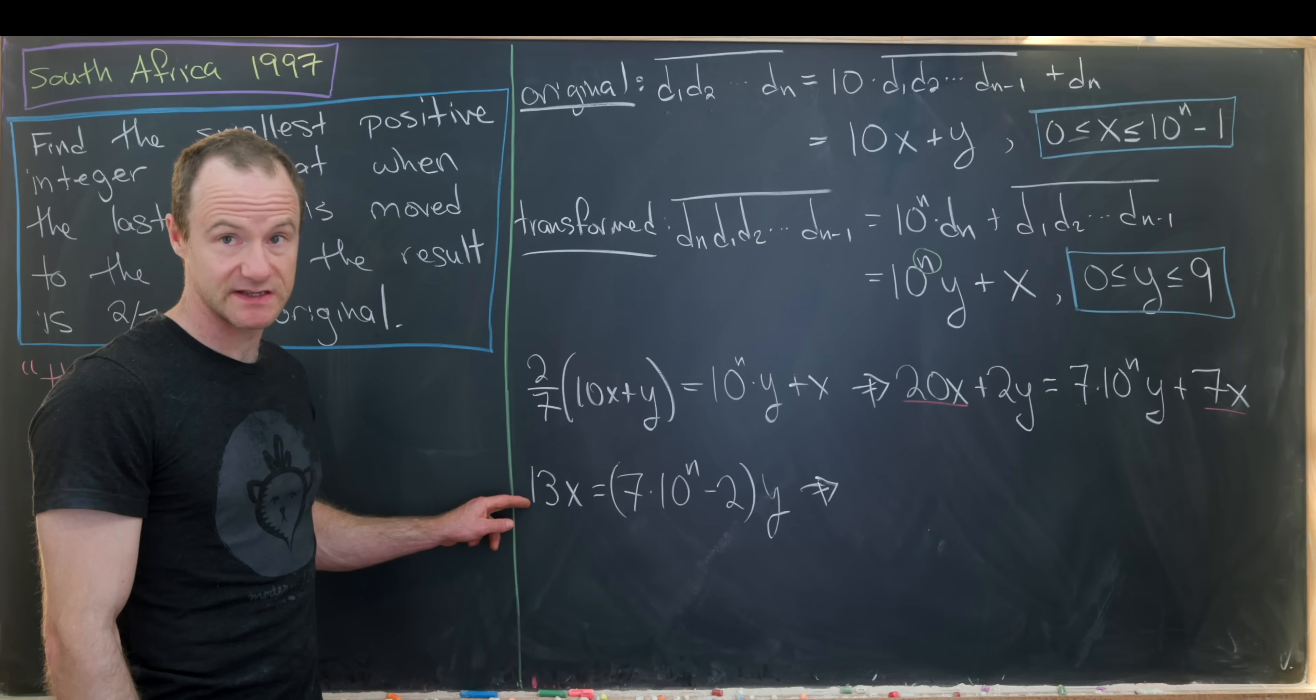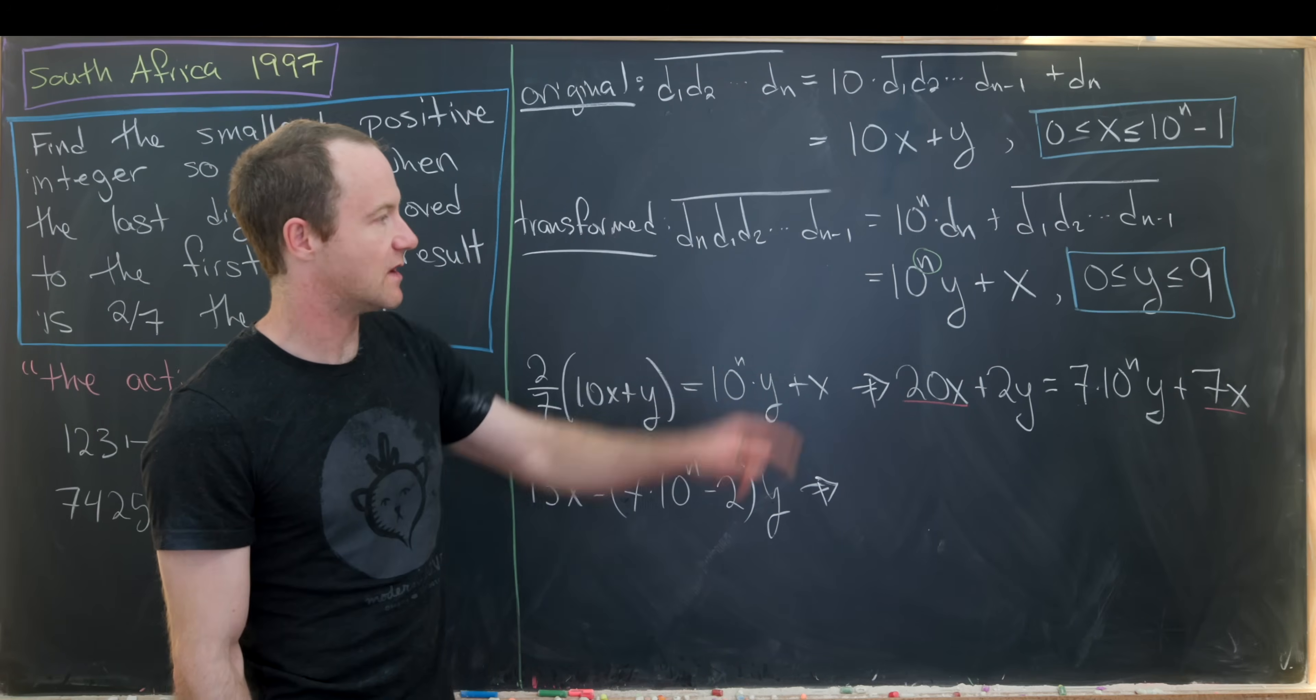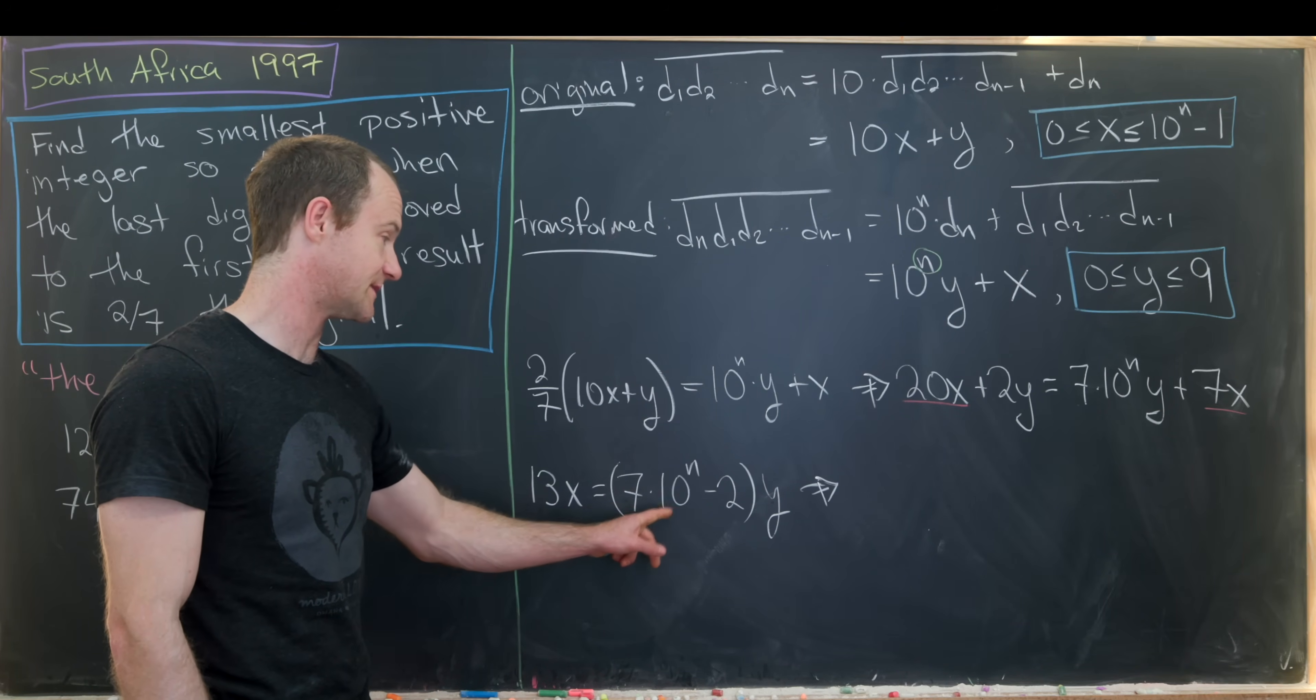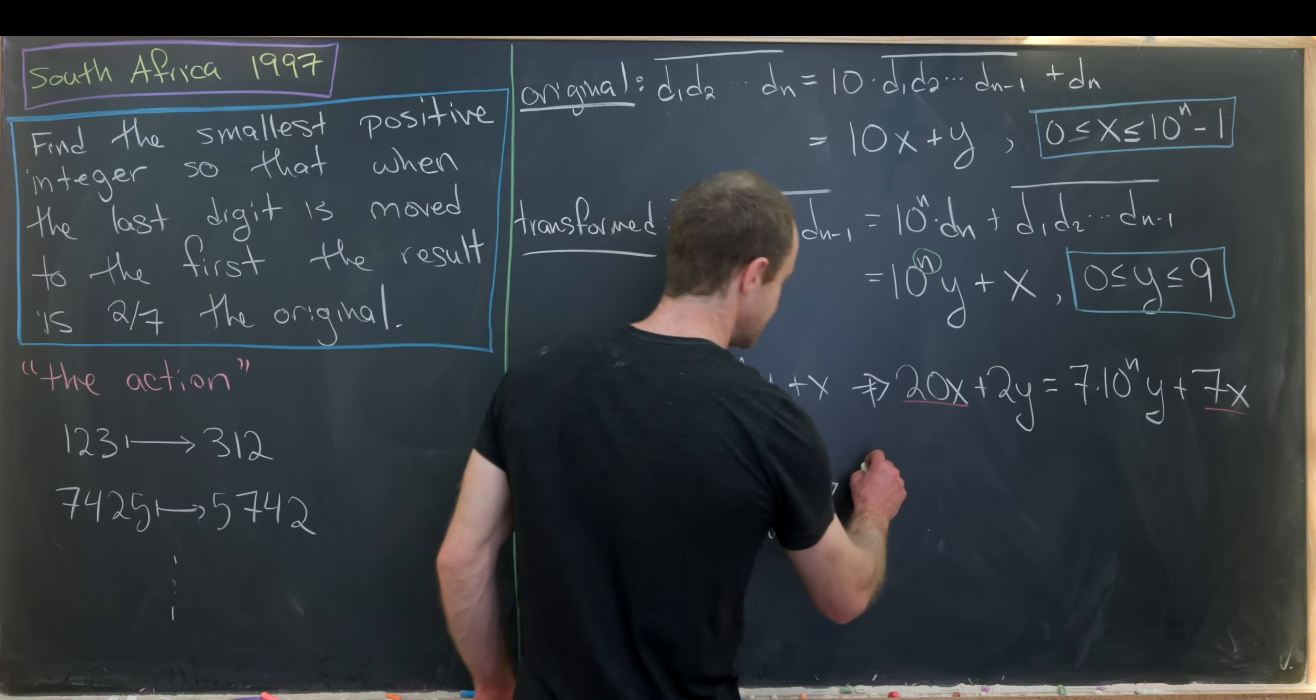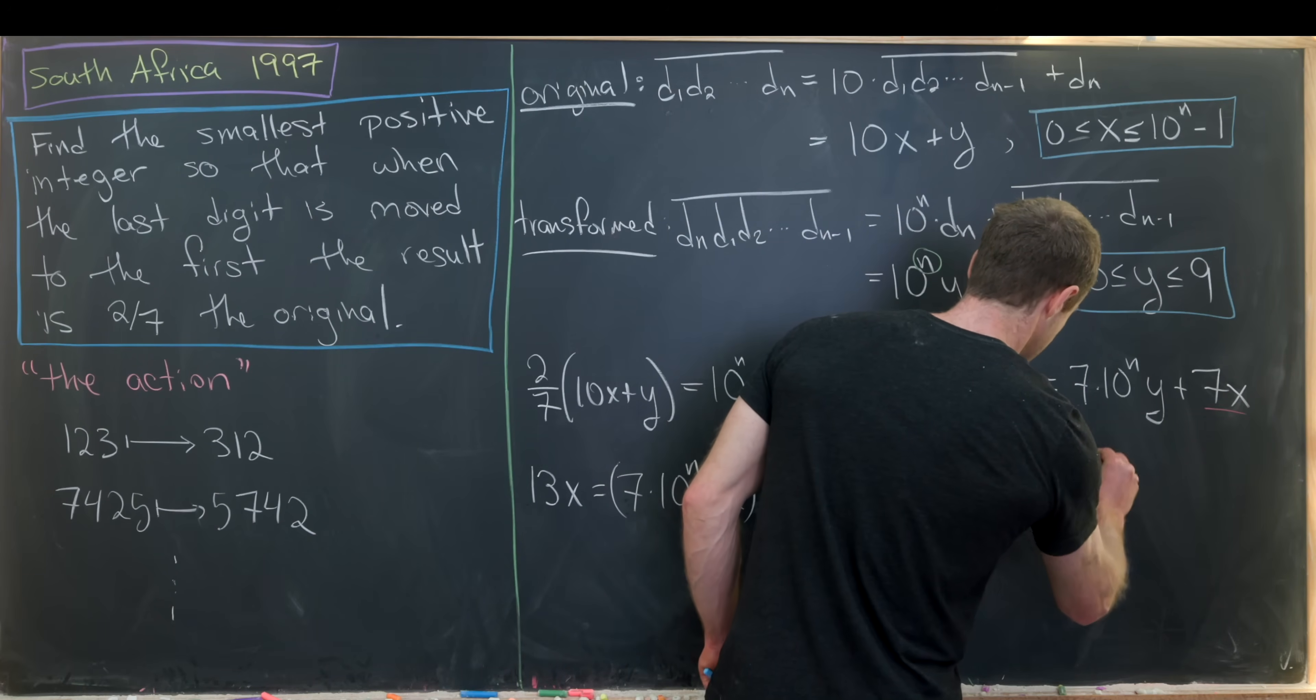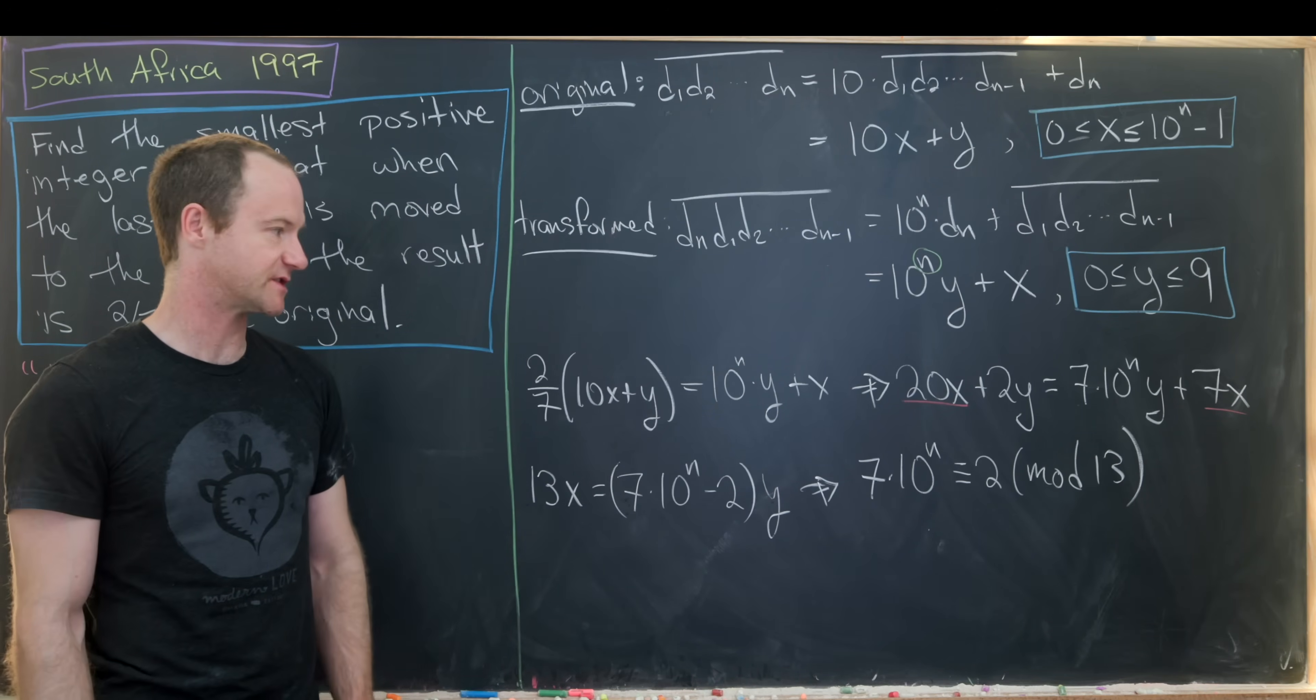But now let's notice this left hand side is a multiple of 13, meaning this right hand side must also be a multiple of 13. Since y comes between 0 and 9 and 13 is prime, that tells us that this stuff right here, the 7 times 10 to the n minus 2 must be a multiple of 13. Or 7 times 10 to the n must be congruent to 2 modulo 13. Well, that's equivalent to saying that this difference is divisible by 13.